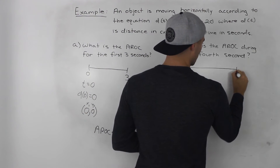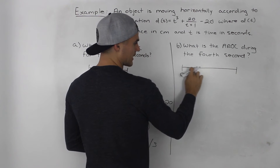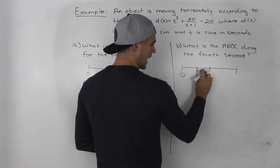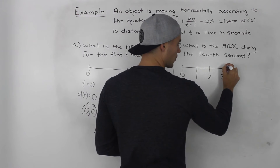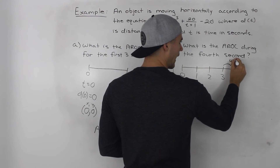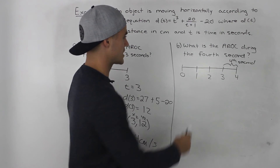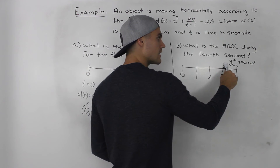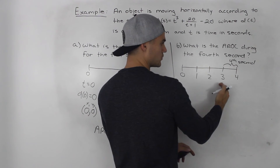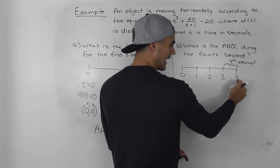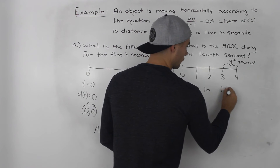The best thing to do is draw a timeline starting at zero. The first second is between 0 and 1, the second second between 1 and 2, the third second between 2 and 3, and the fourth second — which is what we're looking for — happens between 3 and 4. So we have to find the average rate of change between times t = 3 and t = 4.